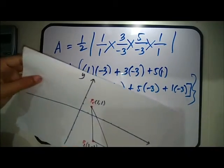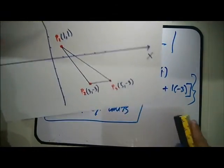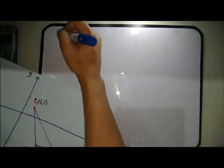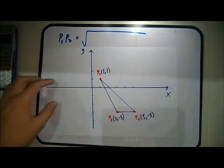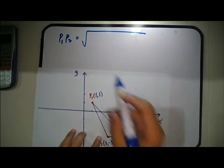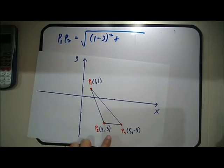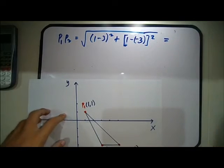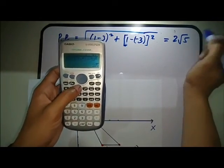The alternate solution uses the distance formula to find the side lengths and then applies Heron's formula. The distance from P1 to P2 equals the square root of (1 minus 3) squared plus (1 minus negative 3) squared, which gives 2 square root of 5. The distance from P2 to P3 equals the square root of (5 minus 3) squared plus (negative 3 minus negative 3) squared, which equals 2 units.